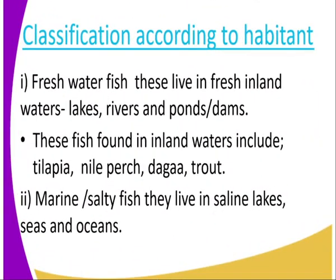When we classify fish according to their habitat, one of the classes we get is the freshwater fish. Freshwater fish are fish that live in fresh inland waters. Examples of freshwater fish include the tilapia, the nile perch, the dagaa, and the trout.